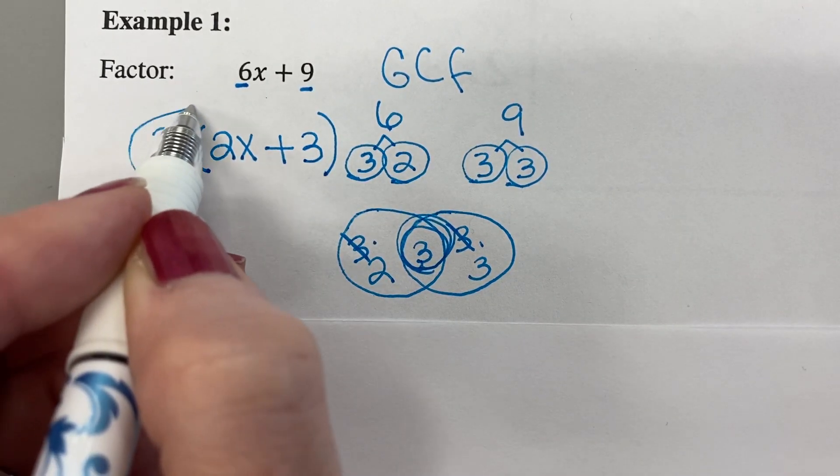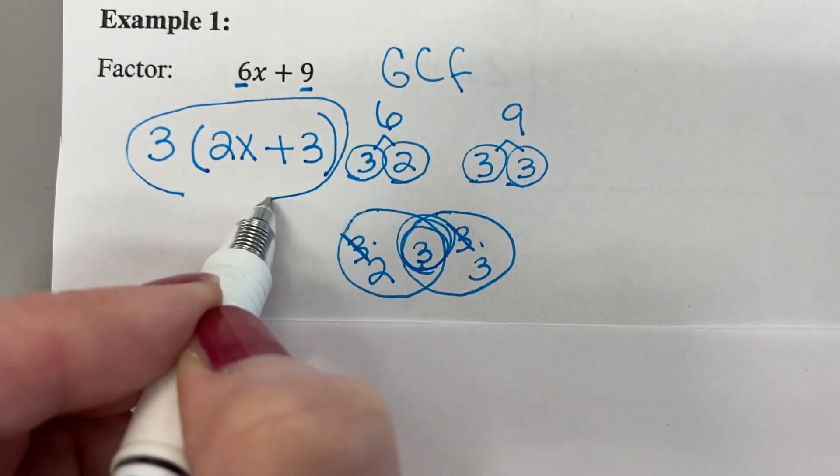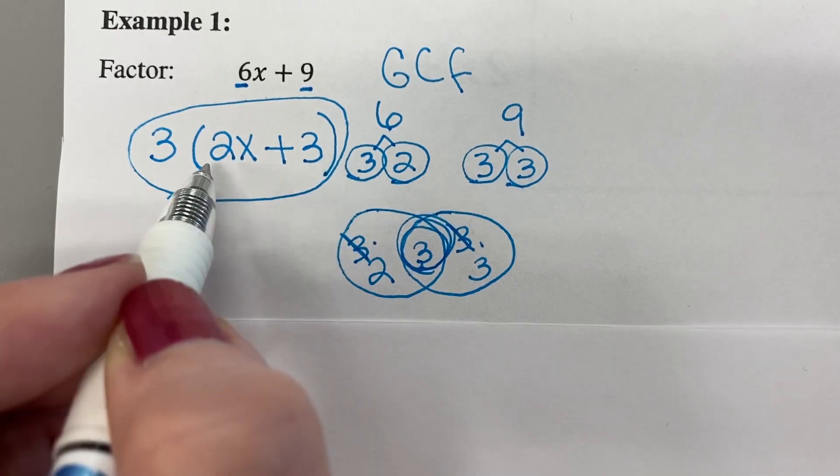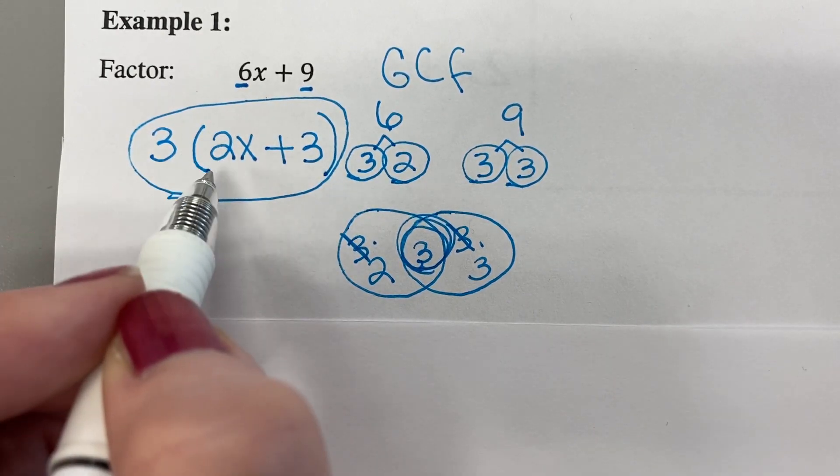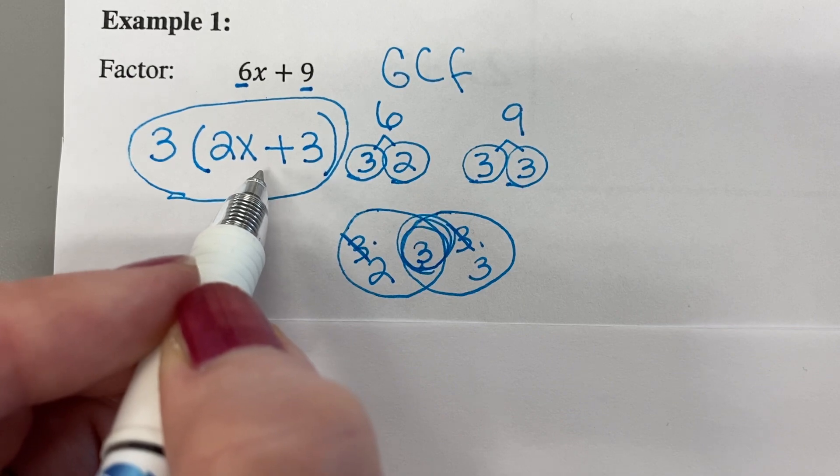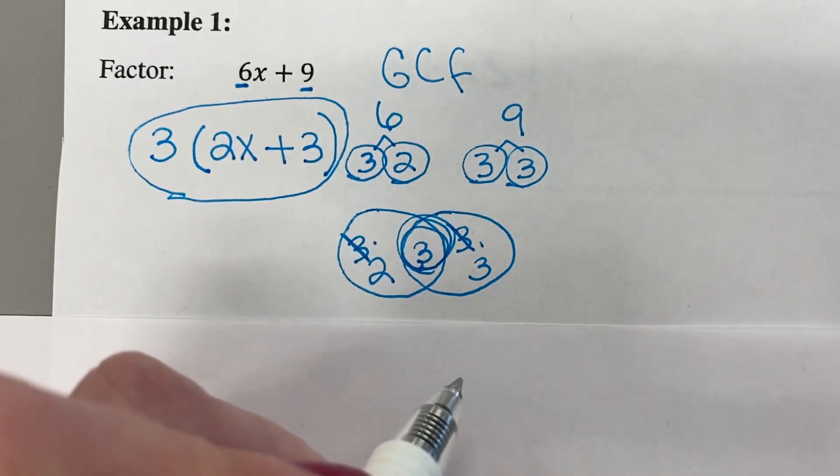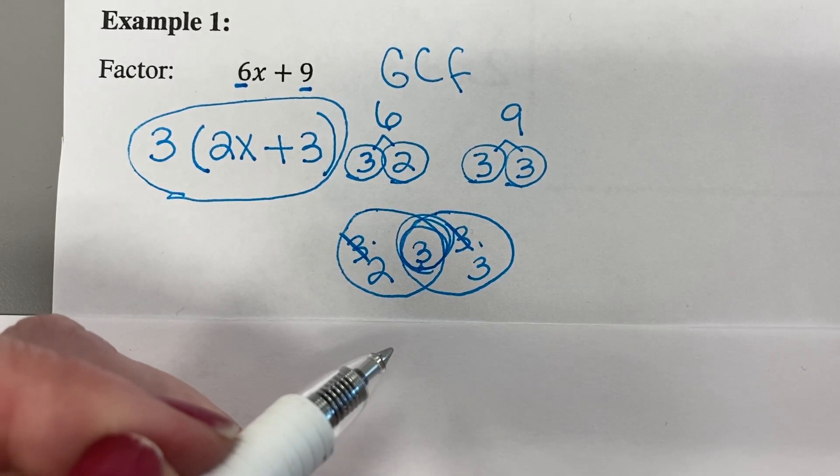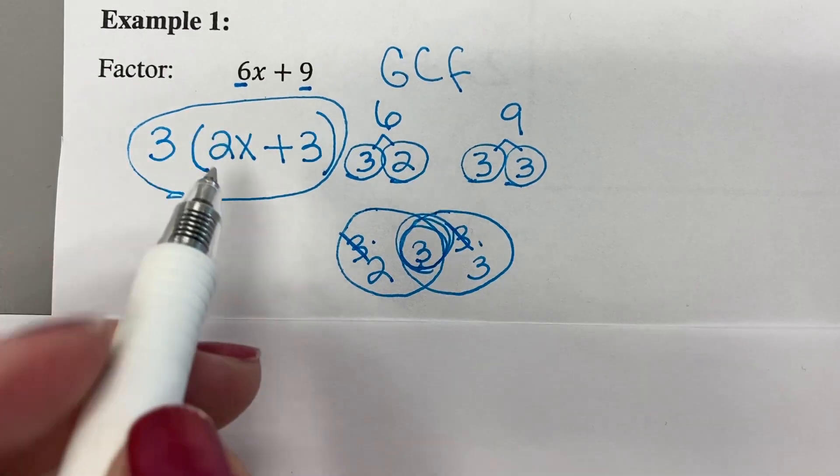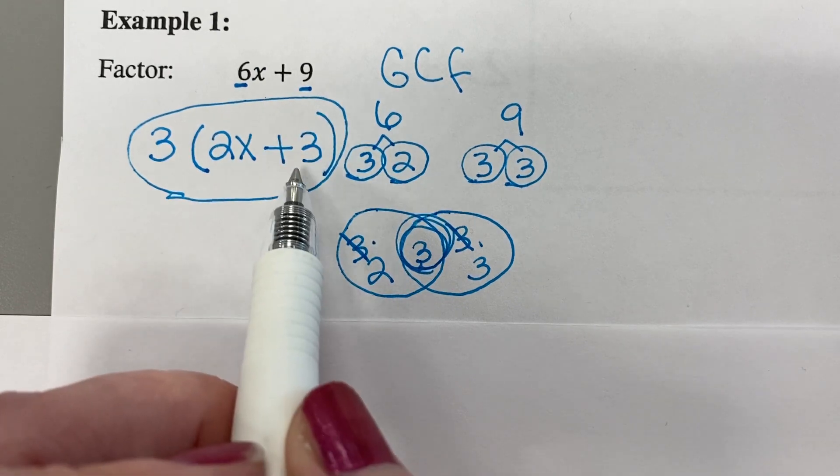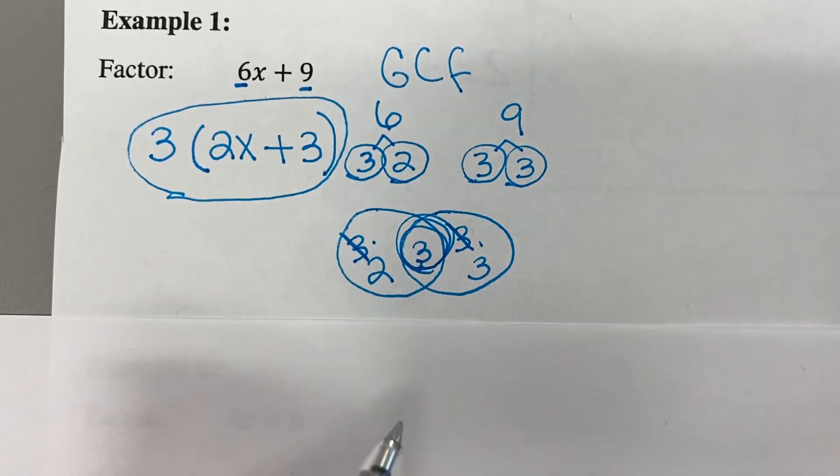This expression, 3 times the quantity of 2x plus 3, that's how you say that, 3 times the quantity of 2x plus 3, is considered the factored or broken down version of the expression 6x plus 9. In our next lesson, we're going to learn about the distributive property, which takes us from this form back to this form. But for right now, we're just worried about factoring.